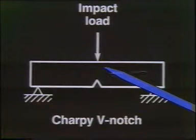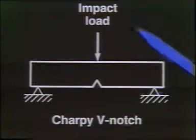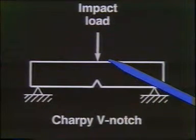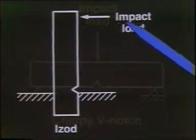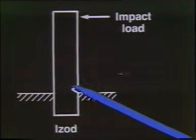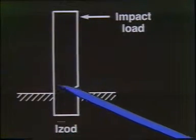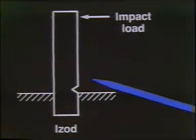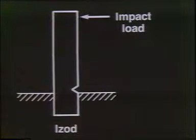In this particular case we have three-point loading — support, support, and the impact load applied on top. Some people say this isn't a fair test, so there's another type called the Izod specimen, where the specimen is grabbed on the bottom, a notch is placed at the base, and we impact-load it from the side. The fracture proceeds from the notch across the specimen and gives us the same type of information.